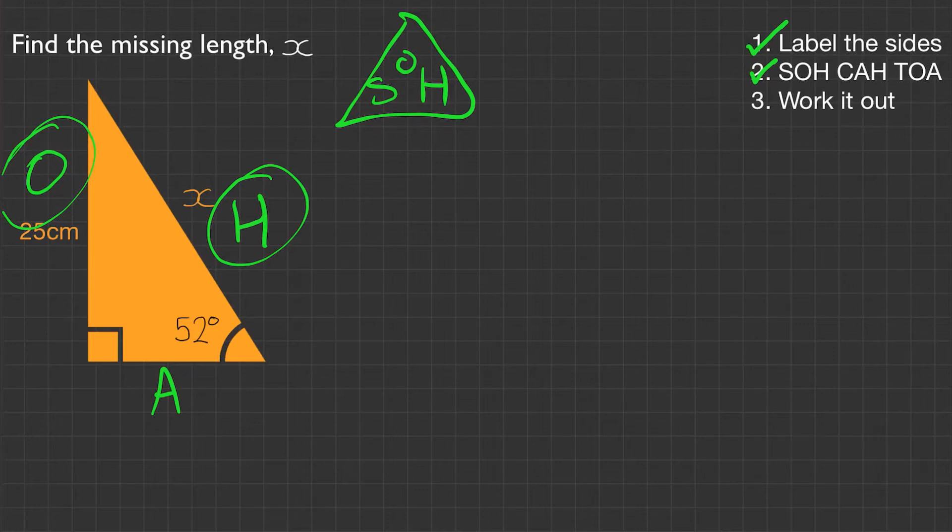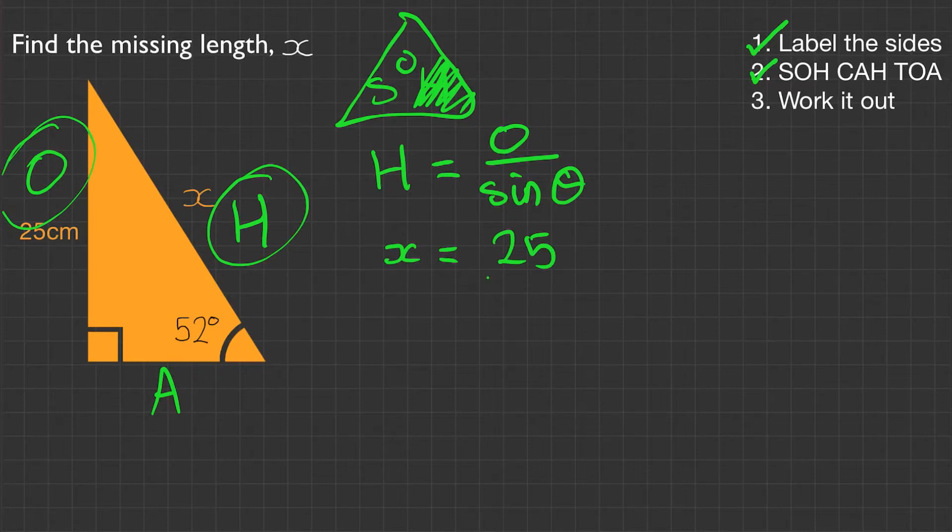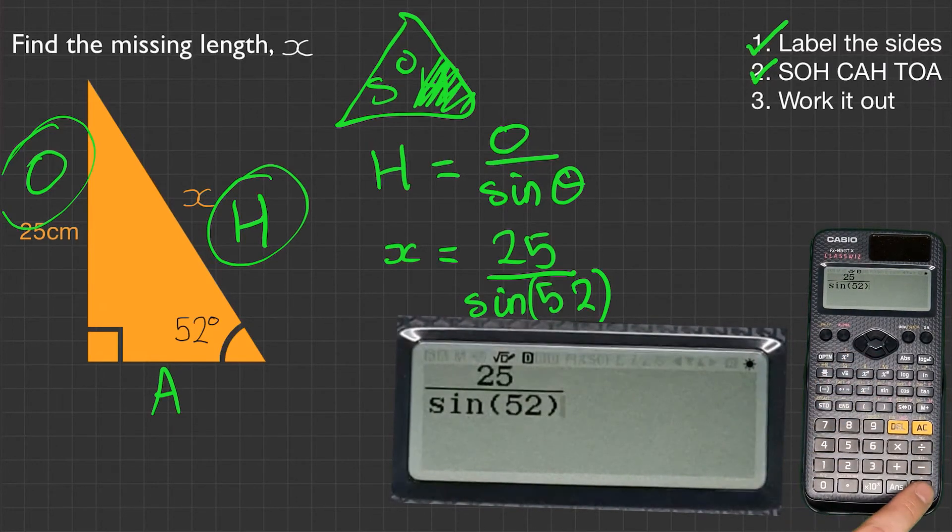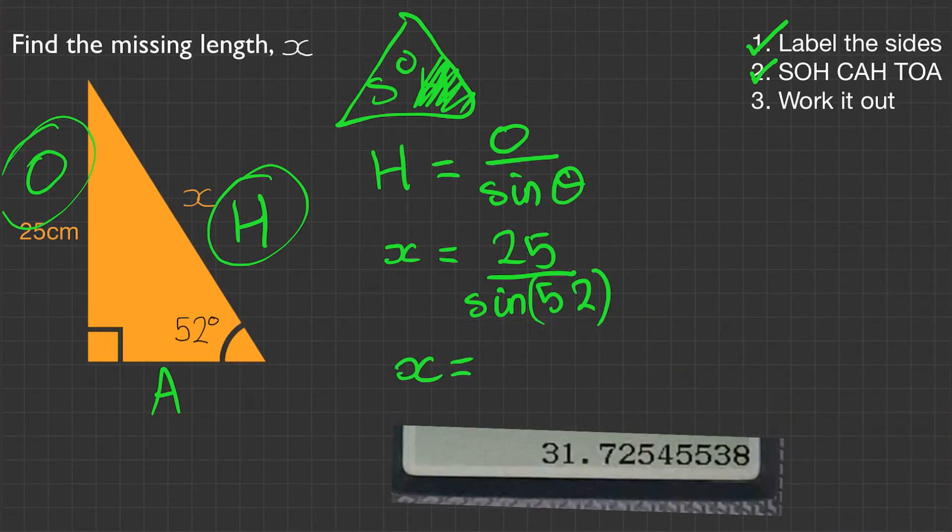We now need to work it out. Firstly, we need to get an equation. As we need the hypotenuse side, I'm going to write hypotenuse equals the opposite over sine of the angle, sine theta. Now we've got the equation, we need to substitute our values into it. The hypotenuse is x, opposite is 25, all over sine of 52. I've put this in brackets as this will make more sense when entering it into your calculator.